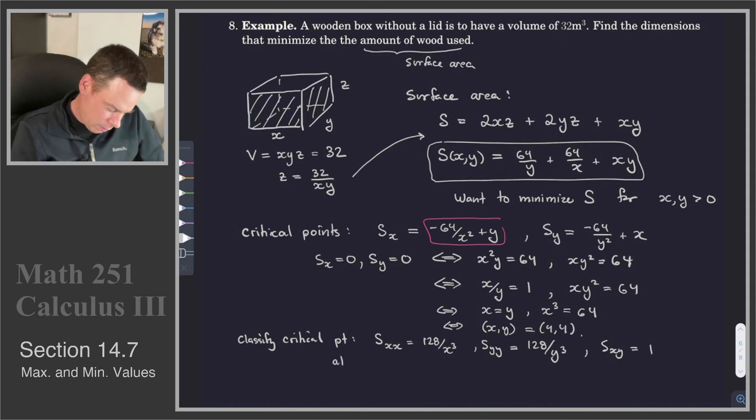So then at the critical point 4, 4, we have that Sxx at 4, 4 is equal to 128 over 4 cubed. 128, that's 2 to the power of 7. 4 cubed, 2 to the power of 6, so that's equal to 2. And that's also equal to Syy at 4, 4. And Sxy is equal to 1.